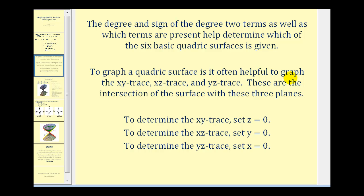To graph a quadric surface, it's often helpful to graph the xy, xz, and yz traces. These are where the surface intersects these three planes. To determine the xy trace, we'll set z equal to zero. To determine the xz trace, we'll set y equal to zero. And to determine the yz trace, we'll set x equal to zero.